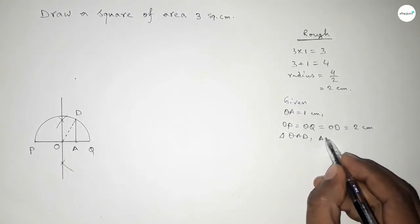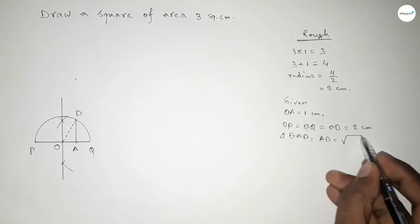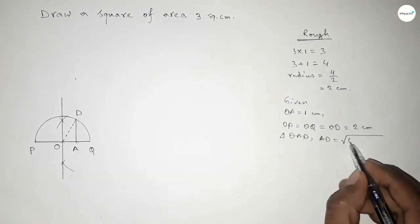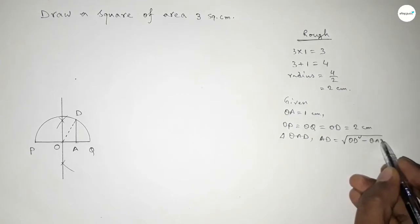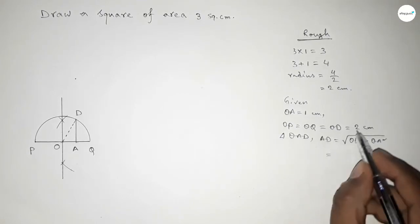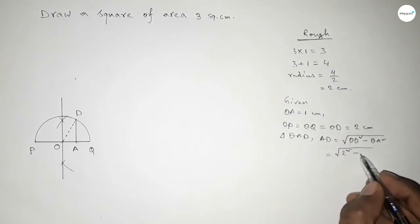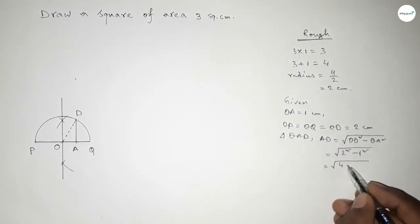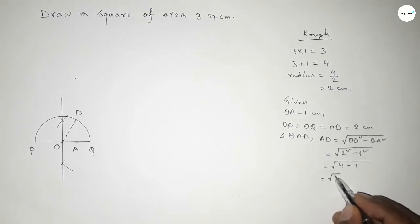By Pythagoras theorem: AD squared equals hypotenuse squared minus base squared, so AD equals OD squared minus OA squared. Putting in the values: AD equals √(2² − 1²) equals √(4 − 1) equals √3 centimeters.